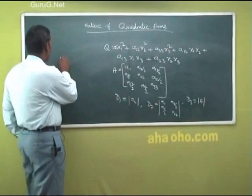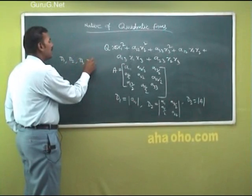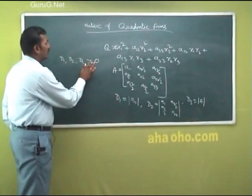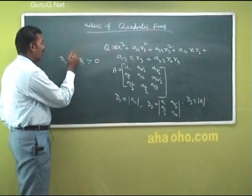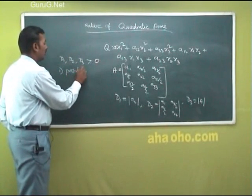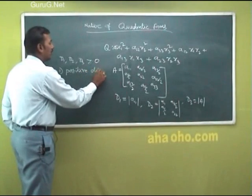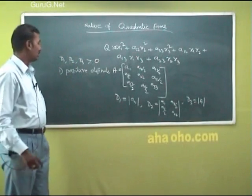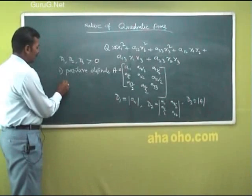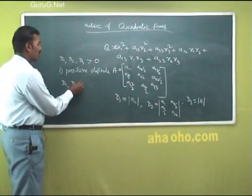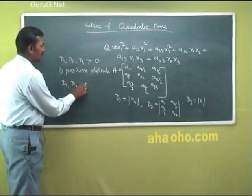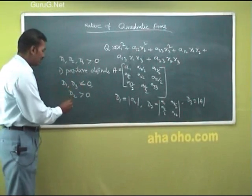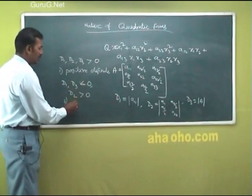If D1, D2, D3 are all positive — greater than 0 — then the quadratic form is called positive definite. If D1 and D3 are less than 0 and D2 is greater than 0, then this quadratic form is called negative definite.